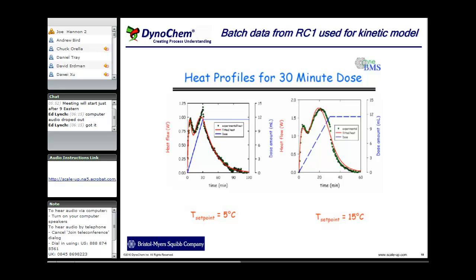And BMS did what would be quite a classic thing to do. They ran a couple of experiments in an RC1 calorimeter, measured fed batch heat flow profiles for this reaction at two different temperatures in this particular screen grab, and then fitted a kinetic model to those heat flow data.